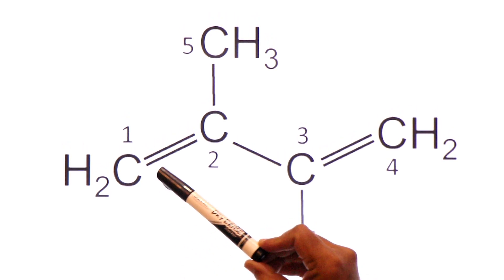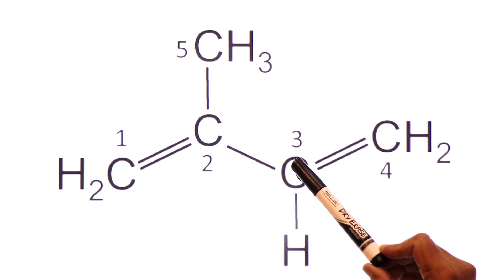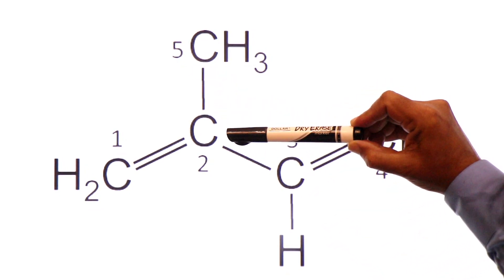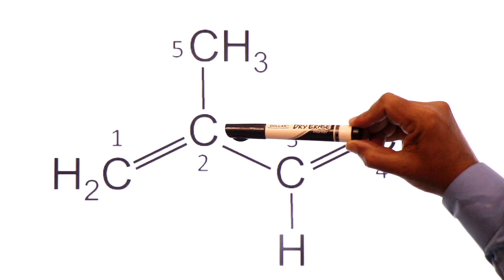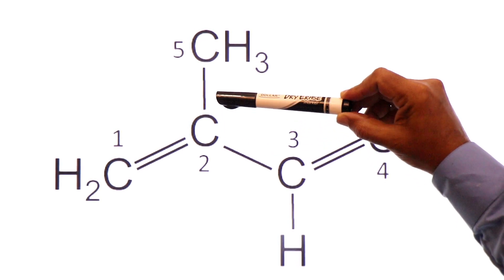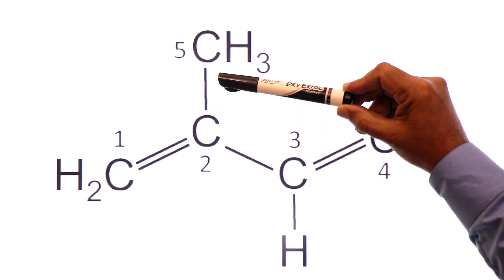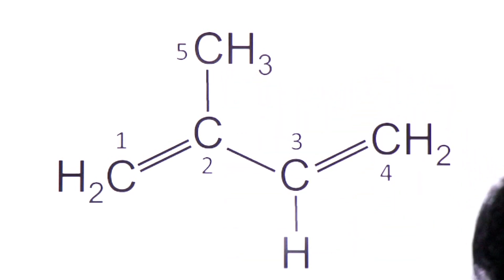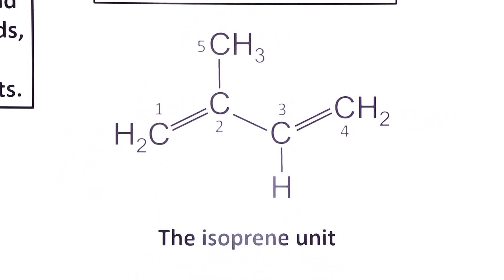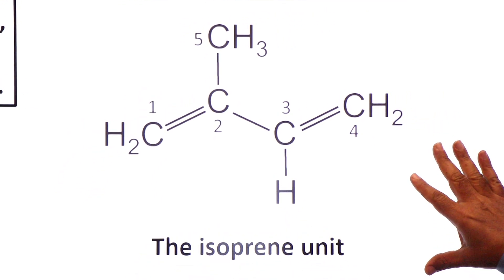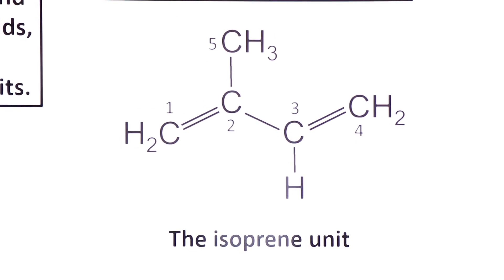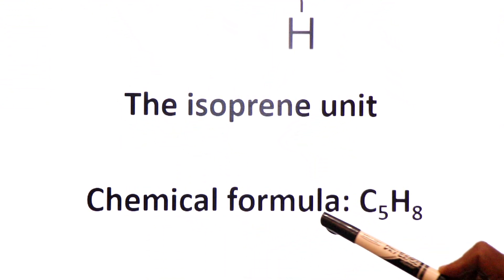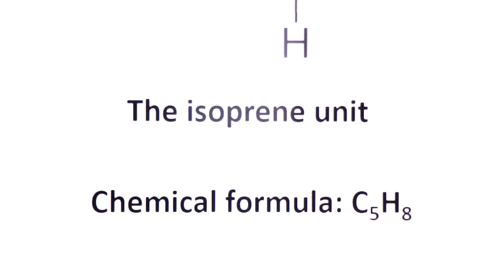The isoprenoid unit has carbon 1, carbon 2, carbon 3, carbon 4, and carbon 5. The second carbon has a side chain attached to it, which is a CH3 methyl group. This is the structure showing the isoprene unit. The chemical formula of the isoprenoid unit is C5H8.